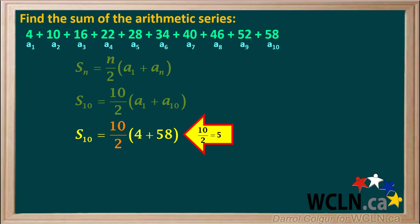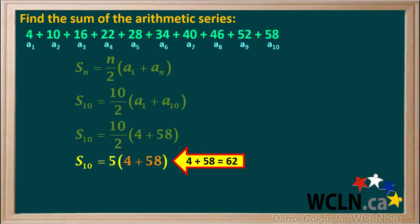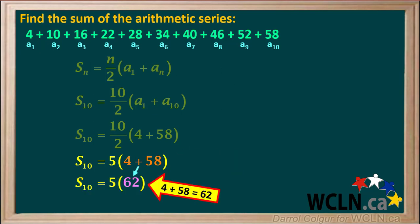The fraction 10 over 2 is equal to 5, so we'll change 10 over 2 to a 5. The numbers in the bracket, 4 plus 58, add up to 62. So we'll replace 4 plus 58 by 62. 5 times 62 is equal to 310. So the sum S10 is equal to 310.